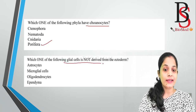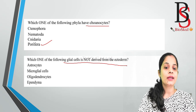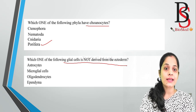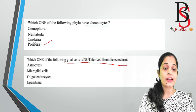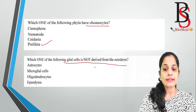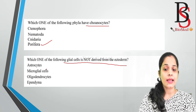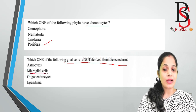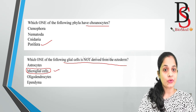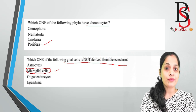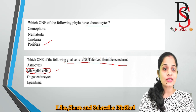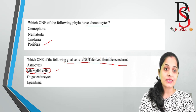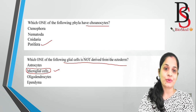Question ten: which one of the following glial cells is not derived from ectoderm? Glial cells, also called neuroglial cells, are non-neuron cells that help in the protection of neurons. The four neuroglial cells are astrocytes, microglial cells, oligodendrocytes, and ependyma. Except for microglial cells, all three others are derived from ectoderm. Microglial cells are derived from mesoderm and are a specialized type of macrophage. They help in destruction of damaged neurons and keep the central nervous system healthy. The correct answer is microglial cells.